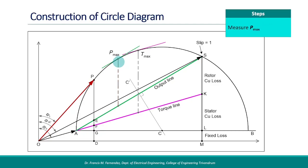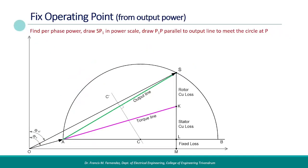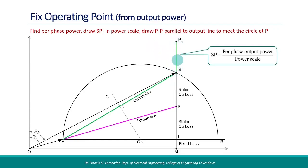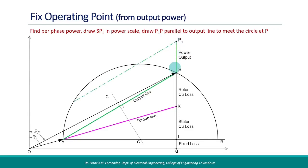In the procedure seen so far, the operating point is fixed based on the input current. If the operating point is to be fixed based on the output power, find the per-phase power output and convert it to an equivalent length sp1 using the power scale. Then draw a line p1p parallel to the power line so that it cuts the circle. It cuts at two points; select the lower side point as the operating point P. Once the operating point is fixed, other parameters can be found using the same procedure as before.